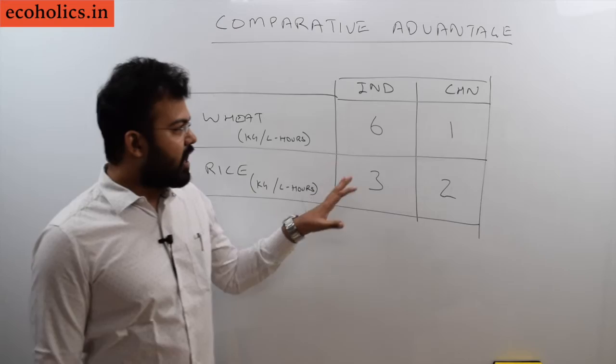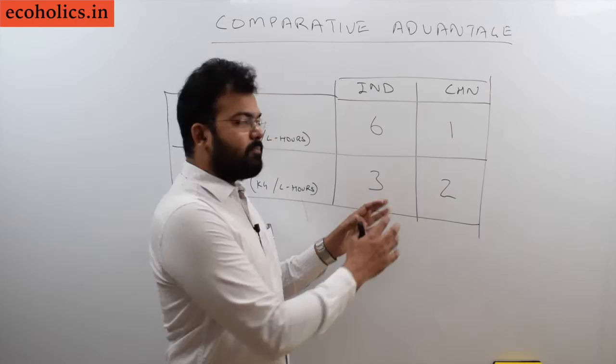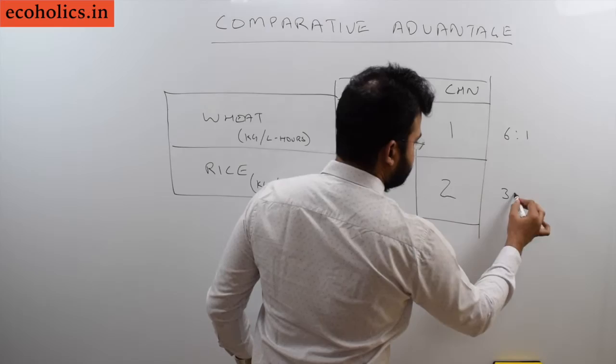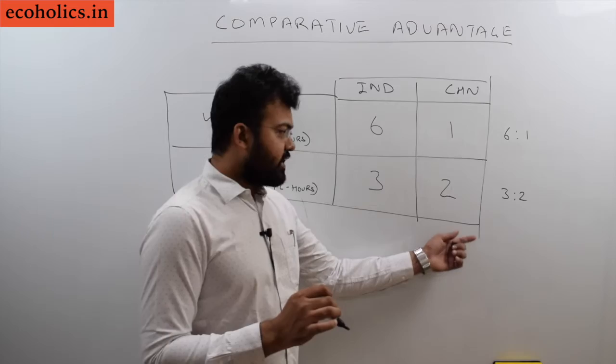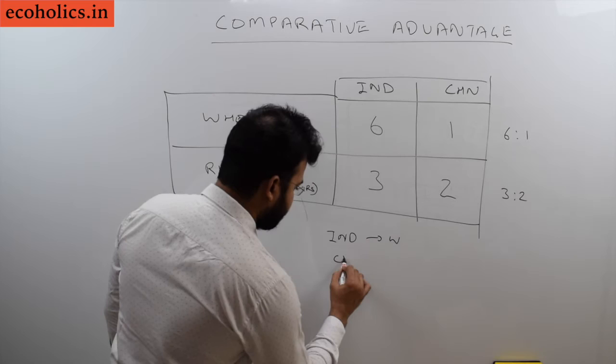How can we analyze what India will produce or what China will produce? In this example, we have to see where the absolute disadvantage for China is less. If we see 6 is to 1 and 3 is to 2, it is clearly visible that the absolute disadvantage is less in terms of rice for China. So India will produce wheat and China will produce rice. This is how we can figure out this particular trade.